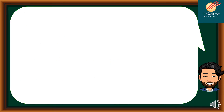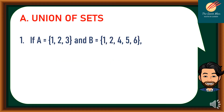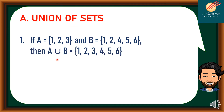Example number one: if A is composed of 1, 2, 3, and B is 1, 2, 4, 5, and 6. If we combine the elements of A and B — that is the meaning of union of sets — so A union B is equal to 1, 2, 3, 4, 5, and 6.